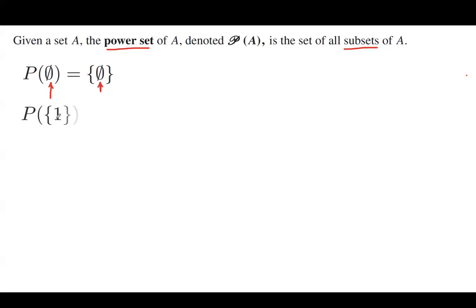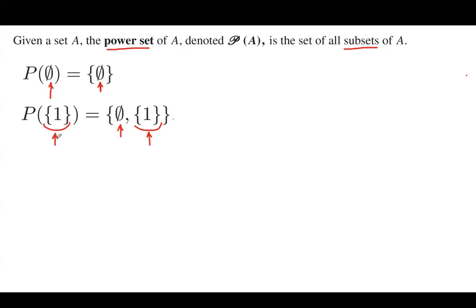The power set of the set including 1 is the set including the empty set and the set including 1. So the set including 1 has only two subsets: one of them is the empty set and the other one is the set itself.